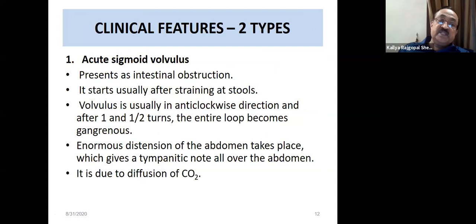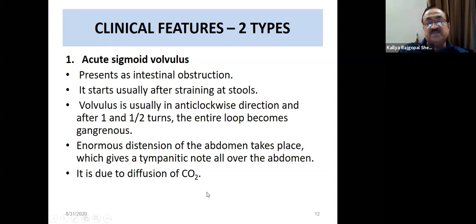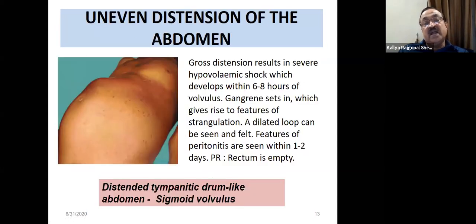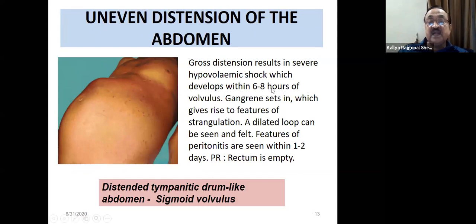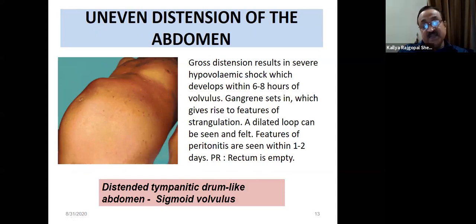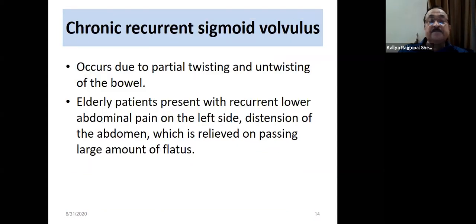Sigmoid volvulus typically twists in an anti-clockwise direction. About one-and-a-half turns leads to gangrene due to carbon dioxide diffusion and massive distension. There is a grossly distended abdomen with severe hypovolemic shock occurring very early — within six to eight hours. If there is a complete one-and-a-half turns, gangrene occurs very fast. Rectal examination reveals an empty rectum; percussion gives a drum-like resonance.